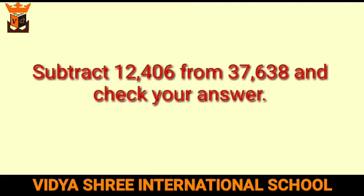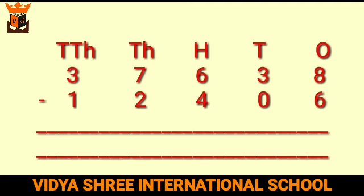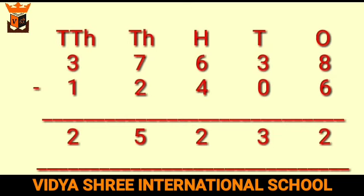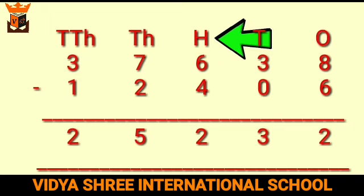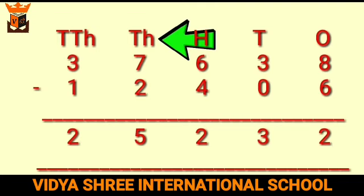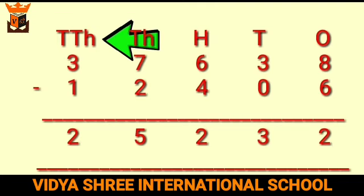Now let us take one more example: subtract 12,406 from 37,638 and check your answer. First, place the numbers in the place value chart. Starting from the right-hand side: in the ones place, 8 minus 6 equals 2; in the tens column, 3 minus 0 is 3; in the hundreds column, 6 minus 4 is 2; in the thousands column, 7 minus 2 is 5; and 3 minus 1 is 2.